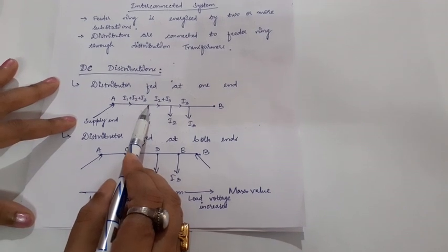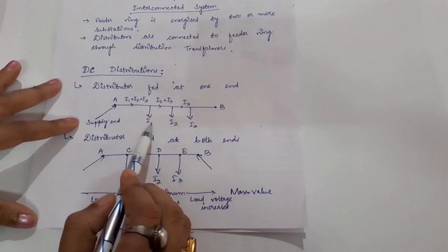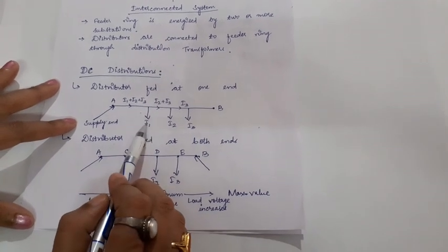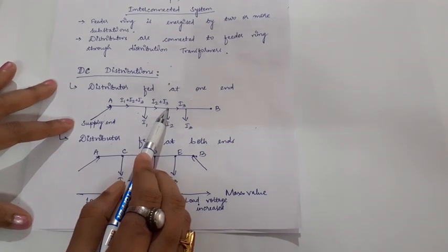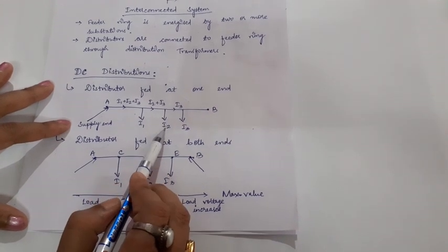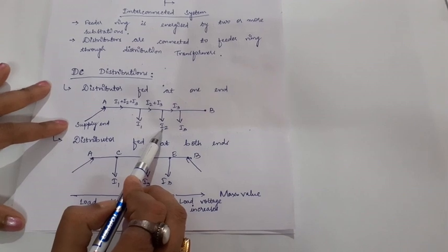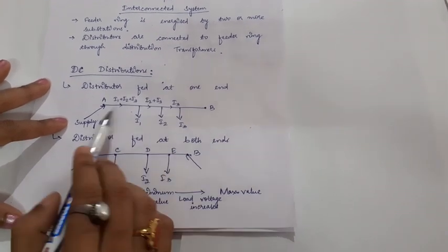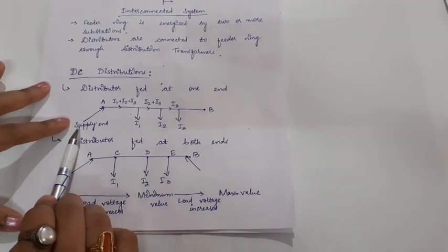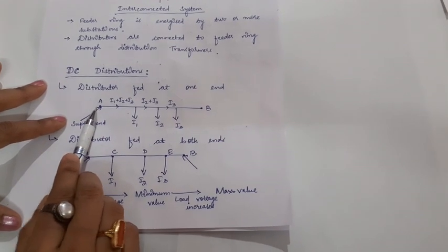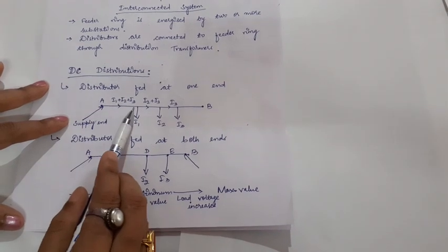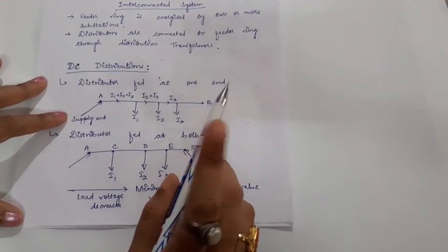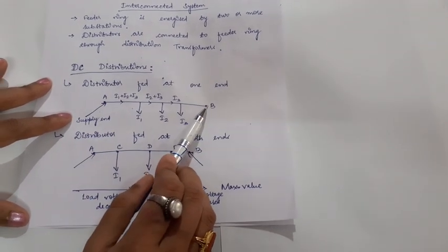Tappings or loading is done at separate points. At the first point, current I1 is tapped off. When I1 is subtracted from the phasor sum of I1 plus I2 plus I3, the remainder current passing through the distributor is I2 plus I3. At a separate point, current I2 is tapped off. The remainder current I3 is then tapped off at another point. In case of distributor fed at one end, the load voltage at the supply end is maximum and goes on decreasing as we move towards point B, where the load voltage is minimum.